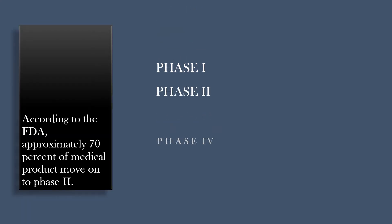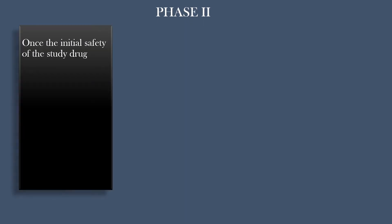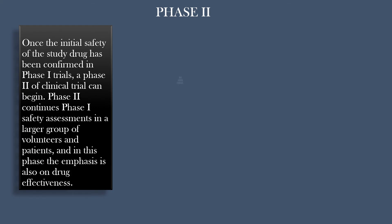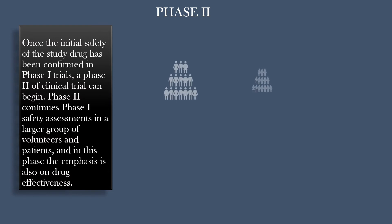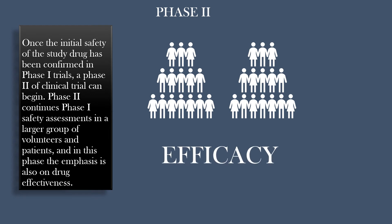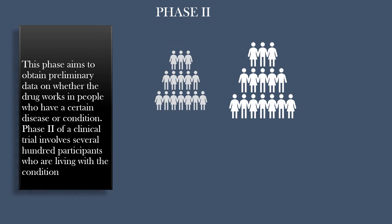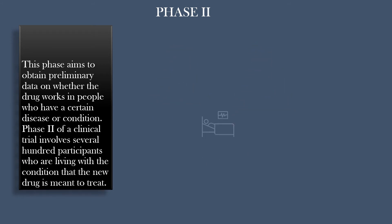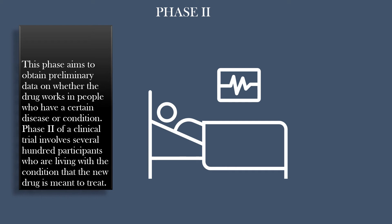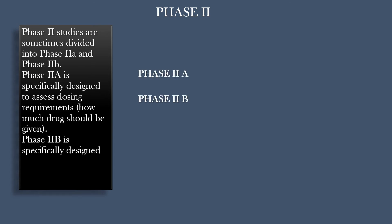Once the initial safety of the study drug has been confirmed in Phase 1 trials, Phase 2 of the clinical trial can begin. Phase 2 continues Phase 1 safety assessments in a larger group of volunteers and patients, and in this phase the emphasis is also on drug effectiveness. This phase aims to obtain preliminary data on whether the drug works in people who have a certain disease or condition. Phase 2 involves several hundred participants who are living with the condition that the new drug is meant to treat. Phase 2 studies are sometimes divided into Phase 2A and Phase 2B.